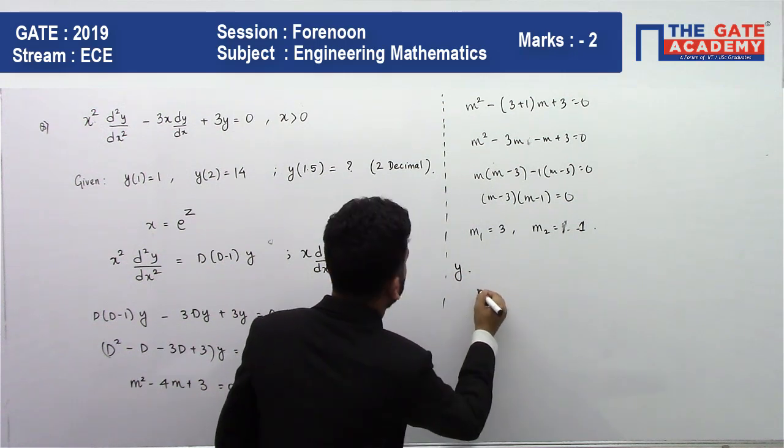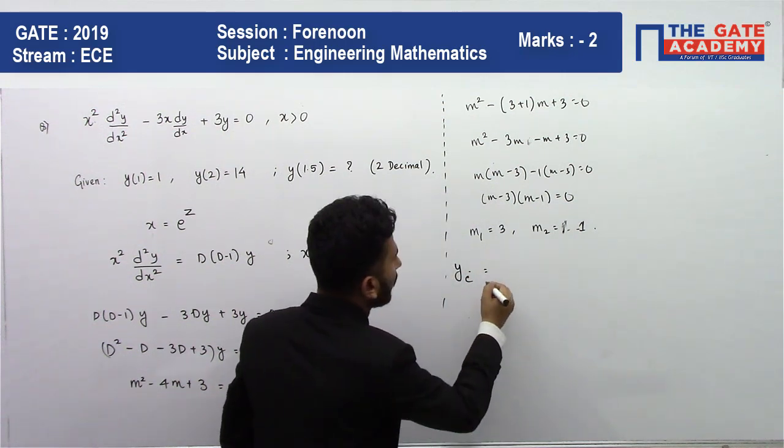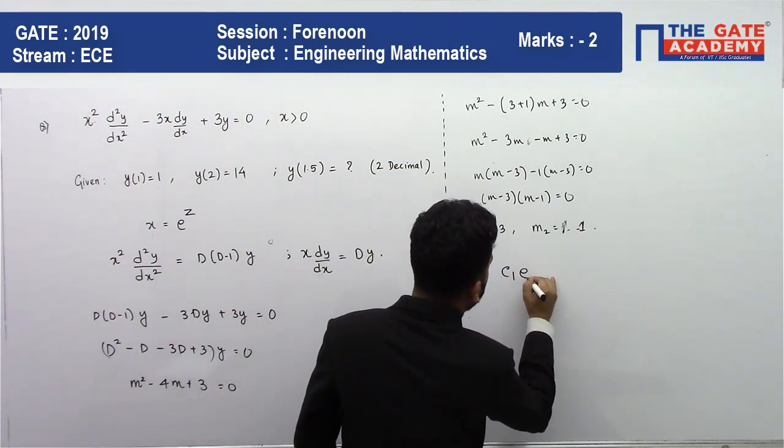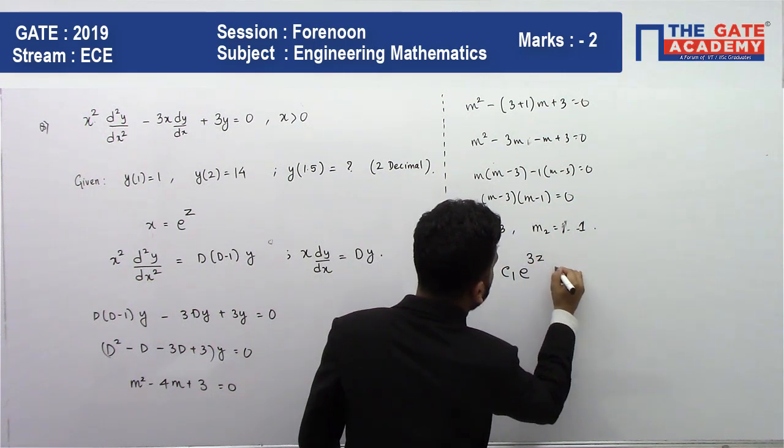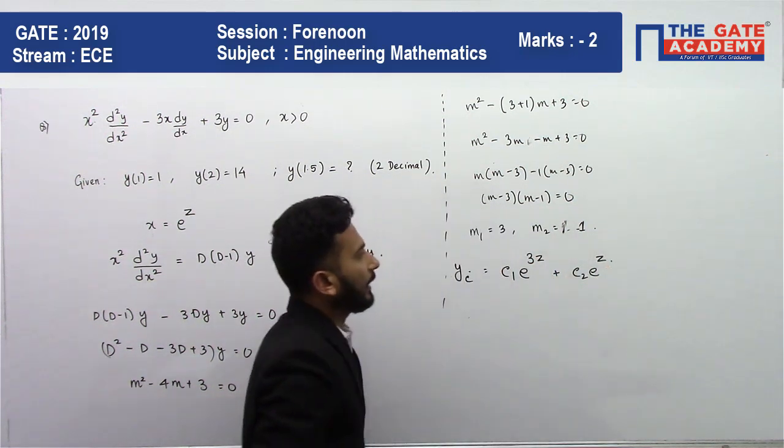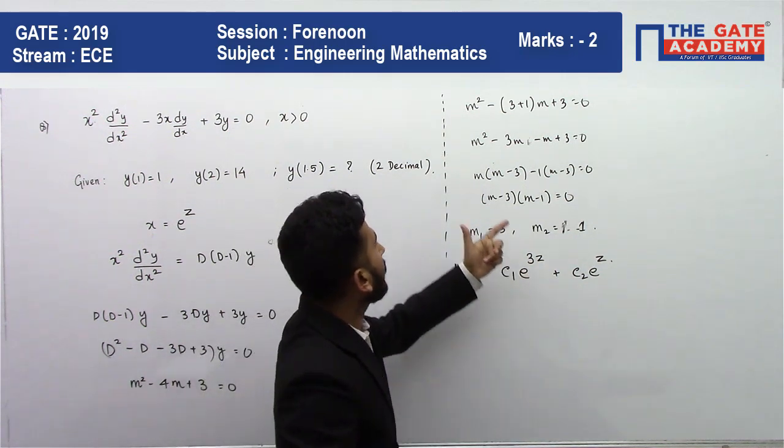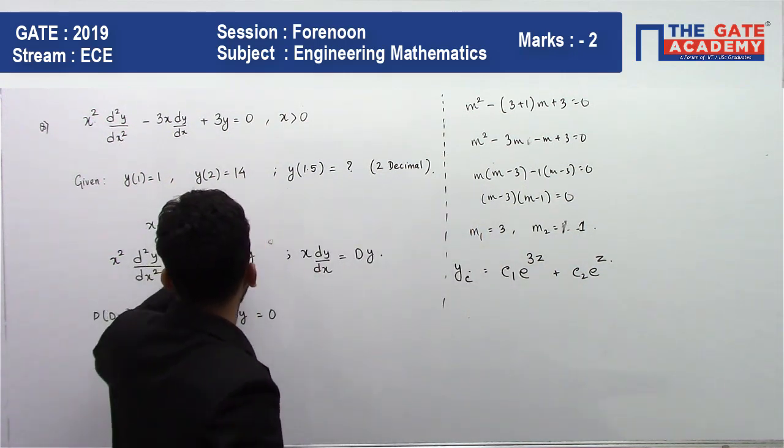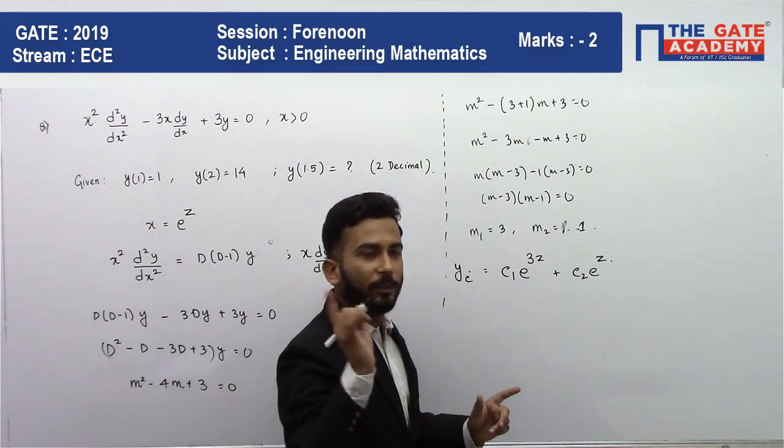So the complementary function is c₁e^(3z) + c₂e^z.